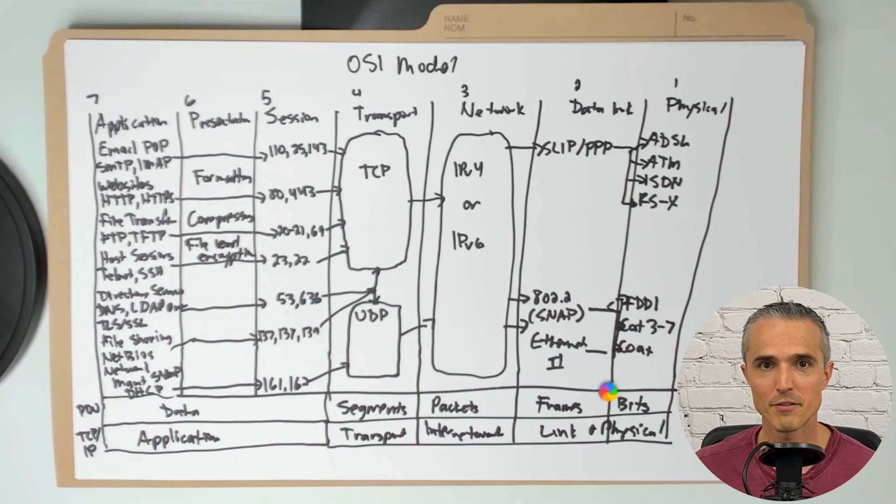I mentioned bits. These turn into frames, packets, segments, and data as protocol data units or PDUs. And in the simplified TCP/IP model that takes these seven swim lanes and puts them into four, we've got application, transport, internetwork, link, and physical.